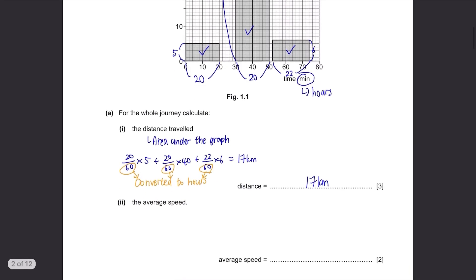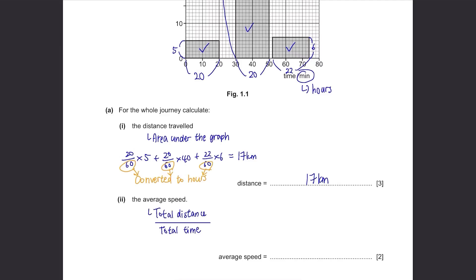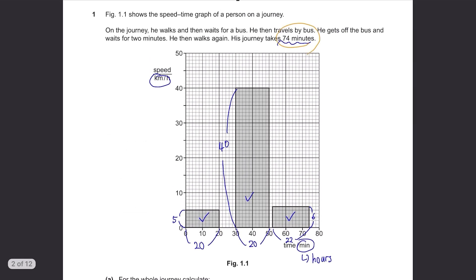The average speed. Average speed is total distance travelled divided by total time. We just found the total distance travelled 17, so divide this by 74 minutes given in the question. Change 74 minutes to hours.